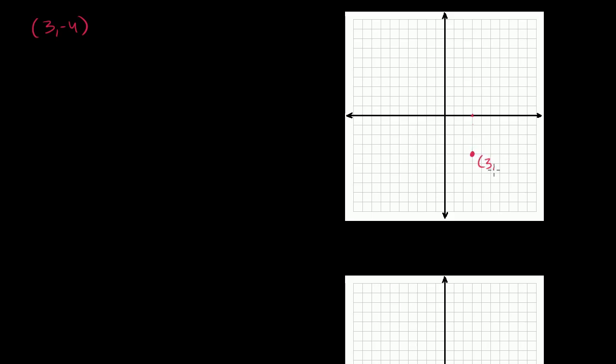Let's say I have the point 3 comma negative 4. So that would be 1, 2, 3, and then down 4 — 1, 2, 3, 4. So that's 3 comma negative 4. And I also have the point 6 comma 1. So 6 comma 1, just like that.